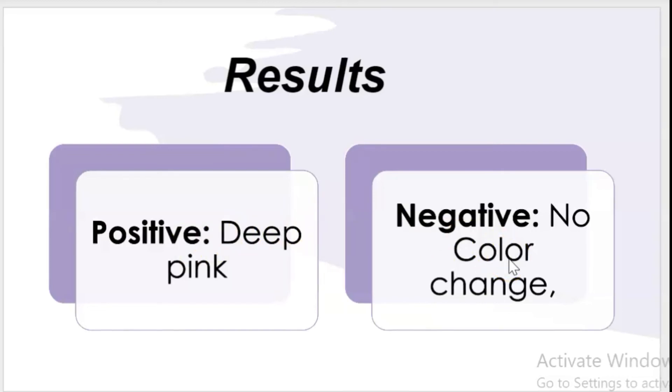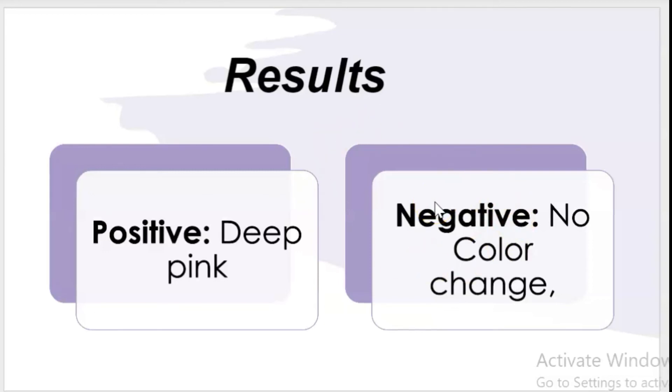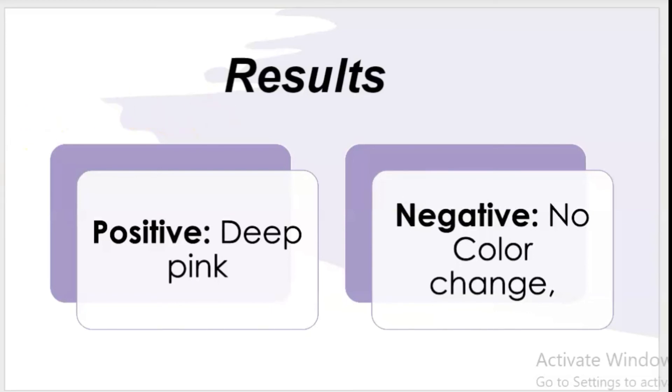If you see no color change, meaning the agar remains in its original yellow color, it means the bacteria you inoculated don't have urease enzyme, so they don't hydrolyze urea and ammonium carbonate is not produced. That's why you see no color change.